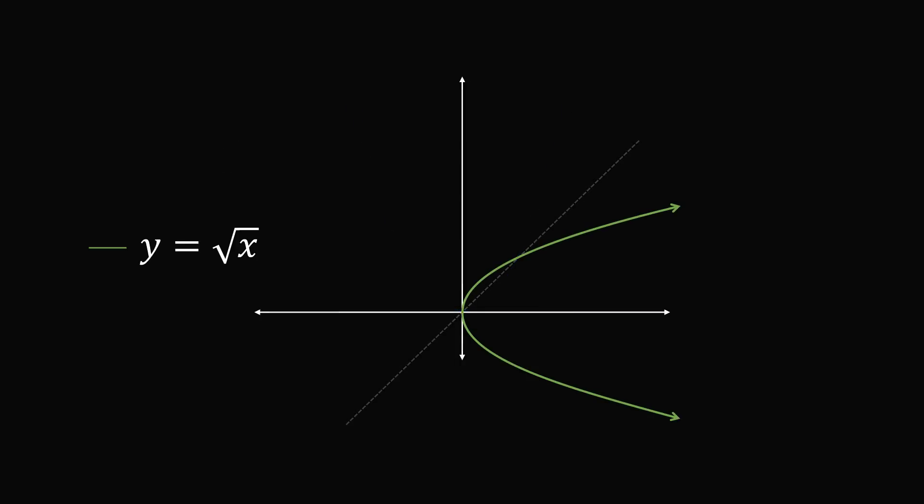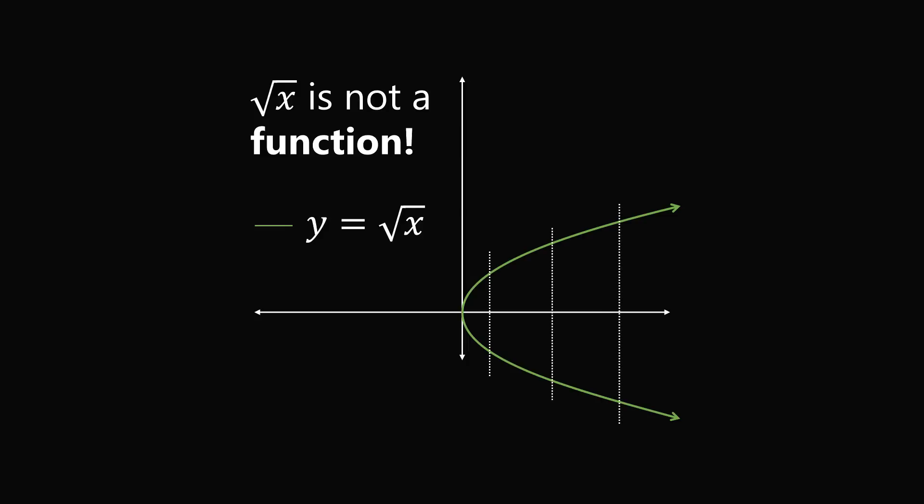For every single x value, we have two possible y values. This will not be a function. It will not pass the vertical line test. If we don't have a function, we won't be able to apply all the normal things we do with continuous functions, or differential functions, or integrating functions. But don't worry, we can fix this problem.